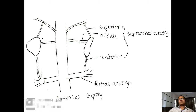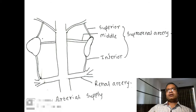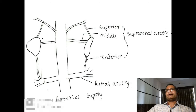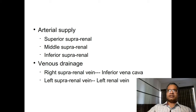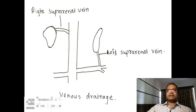Regarding blood supply: the suprarenal glands are supplied by three arteries. The superior suprarenal artery is a branch of the inferior phrenic artery. The middle suprarenal artery is a branch of the aorta. The inferior suprarenal artery is a branch of the renal artery.